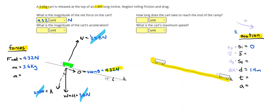So then I can find my acceleration by doing the net force divided by the mass. Which in my case, gives me 2.59 meters per second squared.